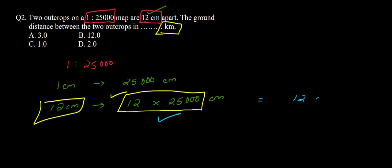1 centimeter on the map represents 25,000 centimeters on the actual ground. So 12 centimeters represents 12 × 25,000 centimeters. To convert to kilometers, we divide by 100 (cm to m) and then by 1000 (m to km). This gives us 12 × 25,000 ÷ 100,000, leaving us with 25 × 12 ÷ 100.